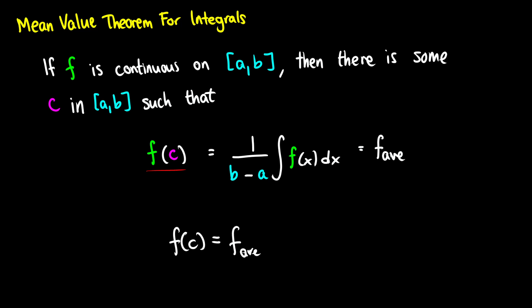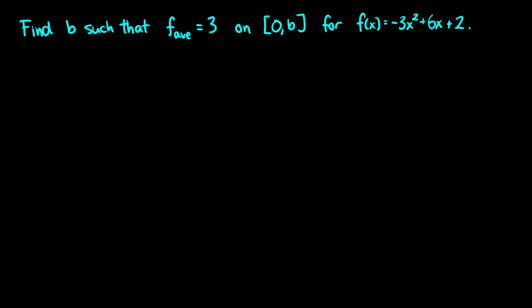We're going to do two problems. I'll show you a harder problem first, then an easier one, to demonstrate a lot of the manipulation. Here's the first: we want to find a number b such that the average value of the function is 3 on the interval from 0 to b, where f of x equals negative 3x squared plus 6x plus 2. We're asking: on what interval does this function have an average value of 3? There might be two intervals where that happens.